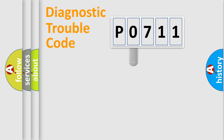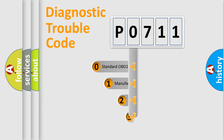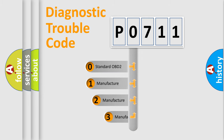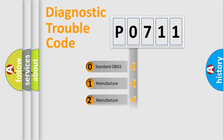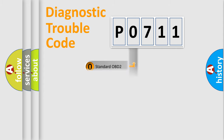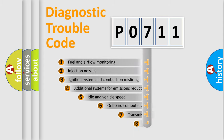This distribution is defined in the first character of the code. If the second character is expressed as zero, it is a standardized error. In the case of numbers 1, 2, or 3, it is a more specific expression of a car-specific error.